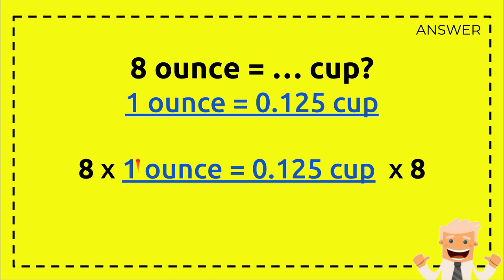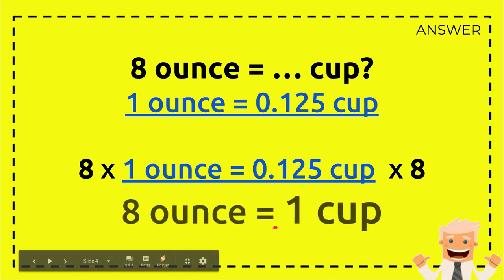So you multiply 1 ounce with 8 and 0.125 cup with 8. All right, so 8 times 1 equals 8 ounce and 0.125 cup times 8 equals 1 cup. So this is the answer of the question. That's all, it's very easy right?